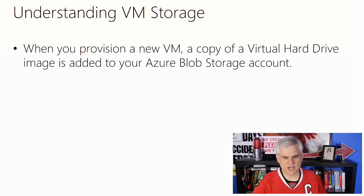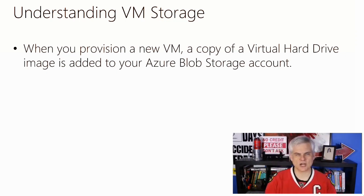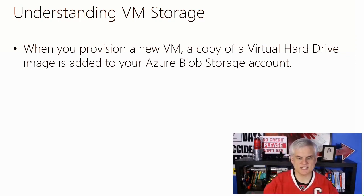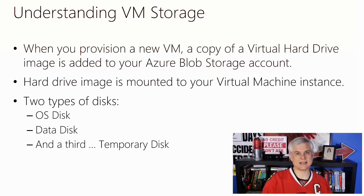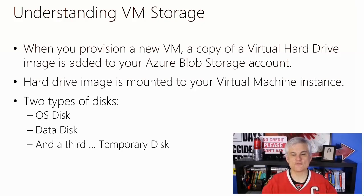Whenever you provision a virtual machine, you're really getting a copy of a virtual hard drive. These are one of several pre-configured virtual hard drives — VHDs — called an image. The image is a template that's copied to a new virtual hard drive disk, and the disk is what your virtual machine boots up from. There are two types of persistent disks: an operating system disk, which holds the operating system and is persistent, and a data disk, which is the preferred place for long-term data. Both are comprised of page blobs in Azure Storage, so you get all the advantages of Azure Storage blobs — high availability, durability, geo-redundancy.